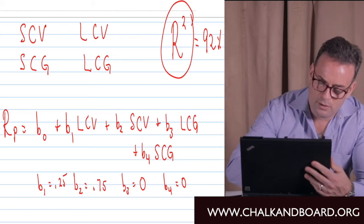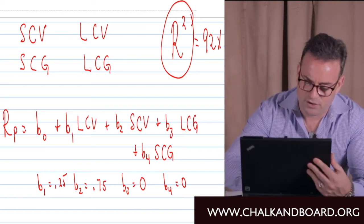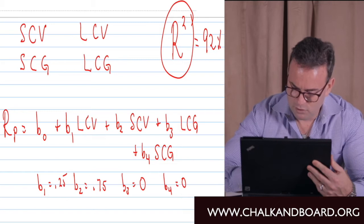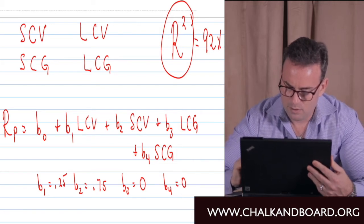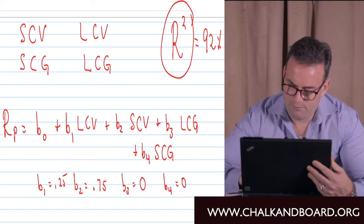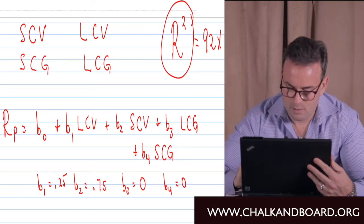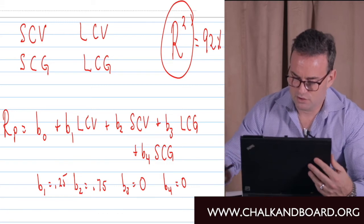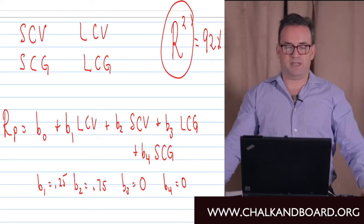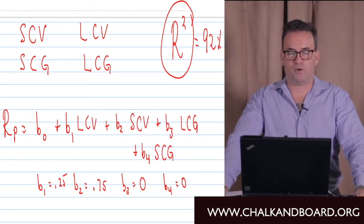The return on our portfolio equals some intercept B-zero, plus B1 times large cap value, plus B2 times small cap value, plus B3 times large cap growth, plus B4 times small cap growth. So the equation is: return = B0 + B1(large cap value) + B2(small cap value) + B3(large cap growth) + B4(small cap growth).